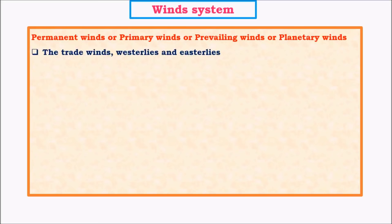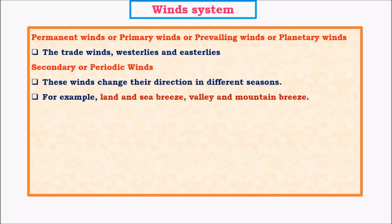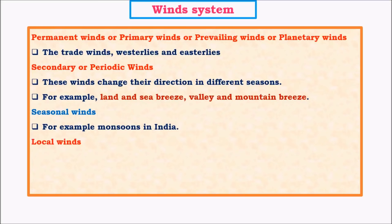I explained all these winds in detail in my previous video. Next we have another important kind of winds called secondary or periodic winds. As the name suggests, they are periodic in nature. There are two kinds with a period of only one day: land and sea breeze, and valley and mountain breeze. There are other kinds where the periodic nature spans the whole year — these are called monsoon winds.